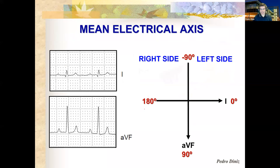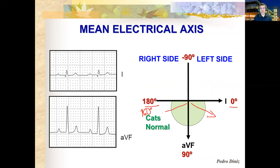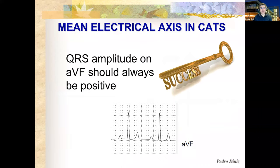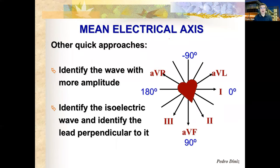For cats, the normal range is much wider — from 0 all the way to 160 to 180 degrees depending on the reference. Because any angle in that direction produces a positive wave on AVF, the take-home message is simple: AVF should always be positive in cats.